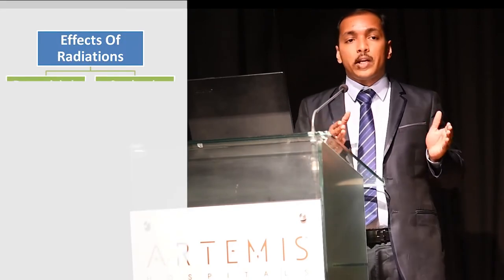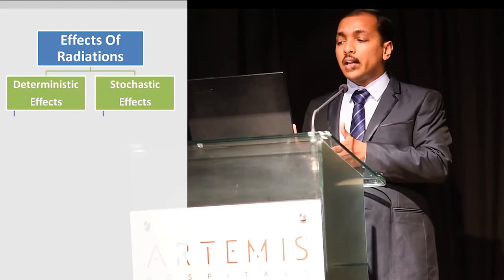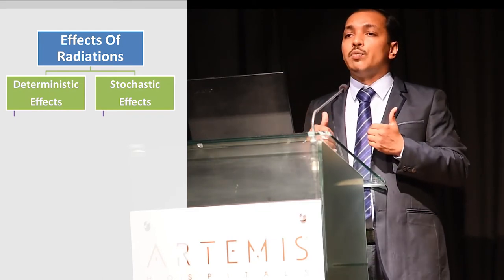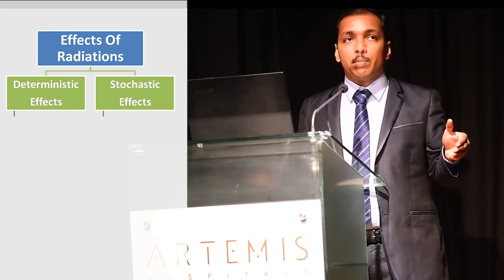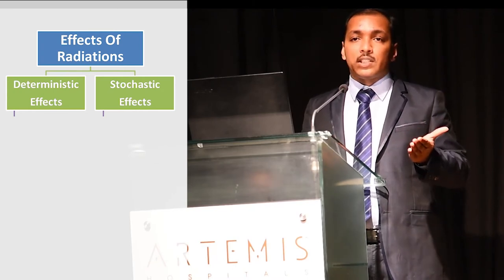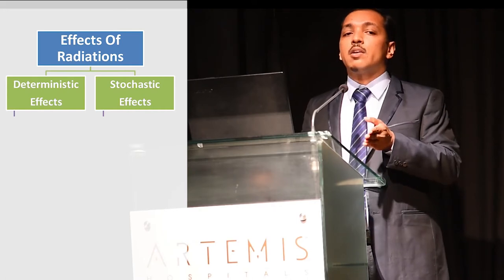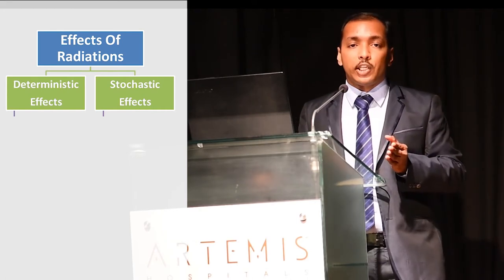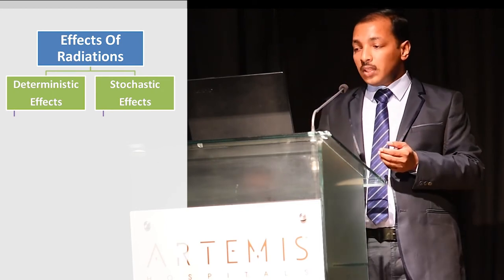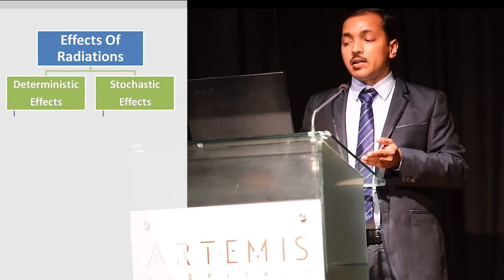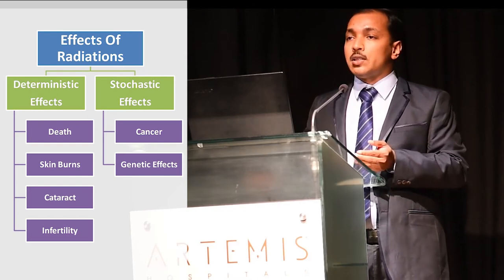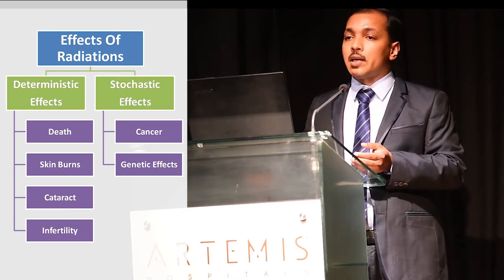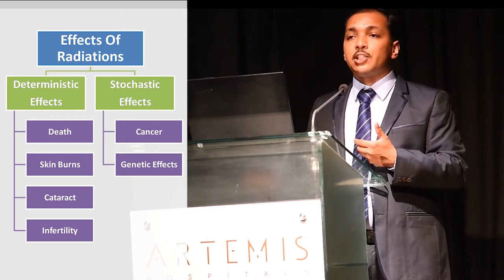Now, what are the harmful effects of radiation? Effects of radiation are divided into two groups: deterministic effects and stochastic effects. Deterministic effects are those we can determine early — they have a threshold limit, and only if you cross that limit will they occur. Examples include death, skin burns, cataract, and infertility. Death can happen with very large amounts of radiation, as happened in the Hiroshima and Nagasaki atomic bomb explosions.